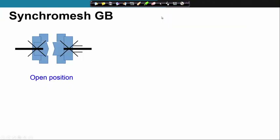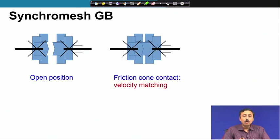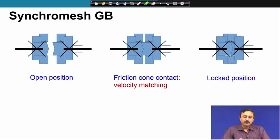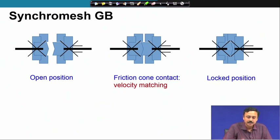This is the open position when not engaged. When you start sliding the dog clutch, the friction cones first come into contact and this leads to velocity matching before the dog clutch goes to the lock position. Once the dog clutch is locked, the two shafts are in complete synchronization and are connected.